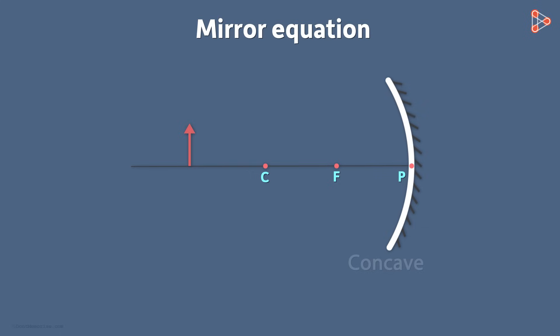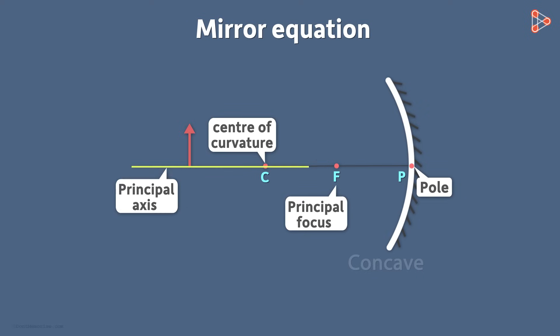You are already familiar with all these symbols. P is the pole, C is the center of curvature. It is the center of a sphere of which the reflecting surface is a part of. The midpoint of C and P is the principal focus F. And finally the line which joins all of them is the principal axis.